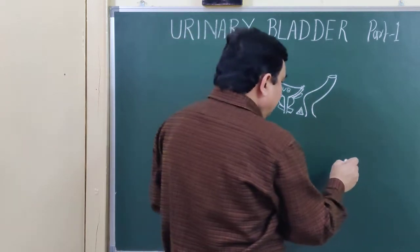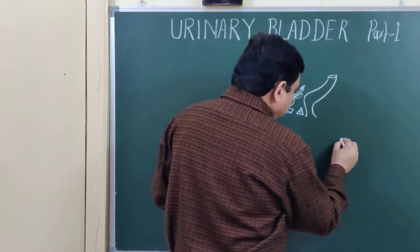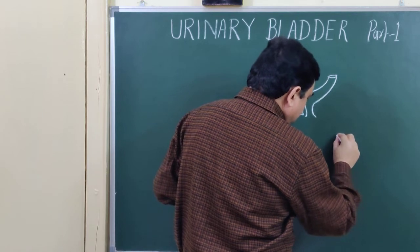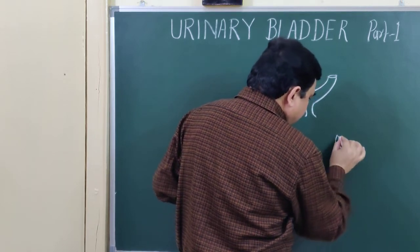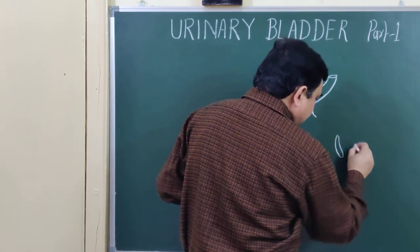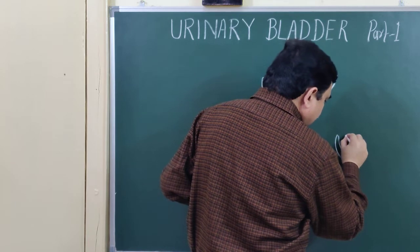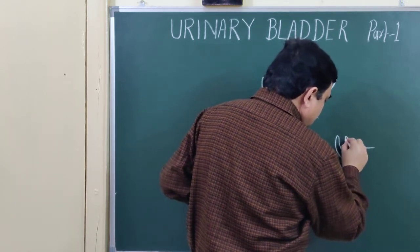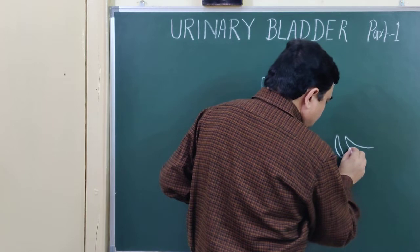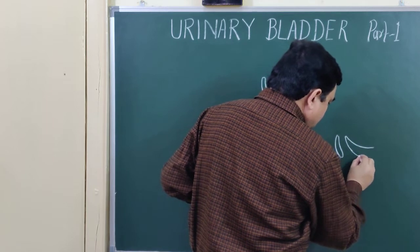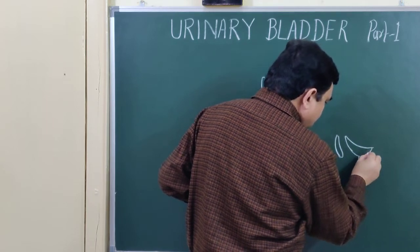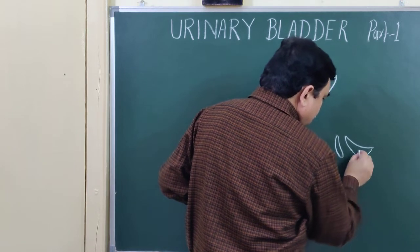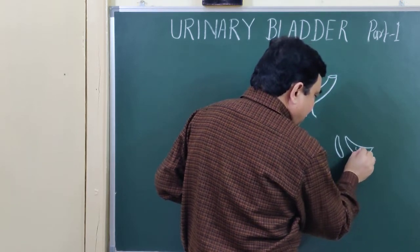The urinary bladder is a reservoir of urine and it is present in the anterior part of the pelvic cavity in the case of an adult, male or female. This is the pubic symphysis, and this is the urinary bladder in the female.